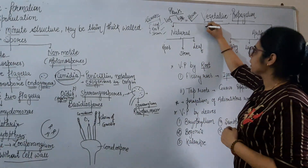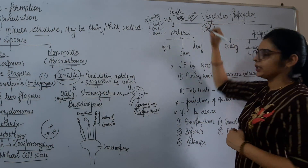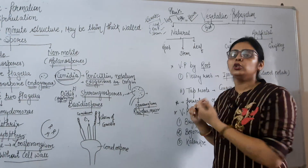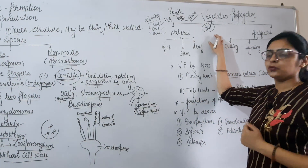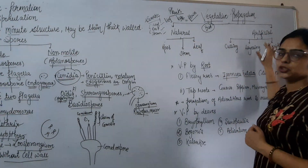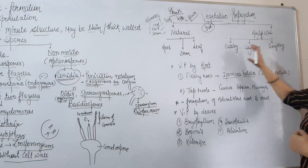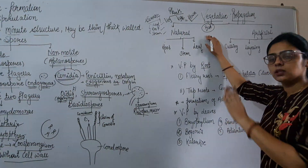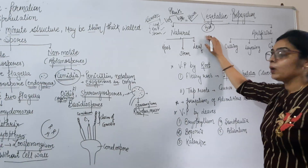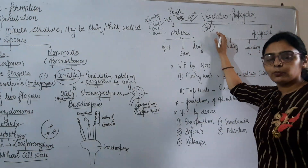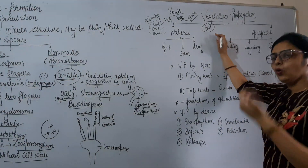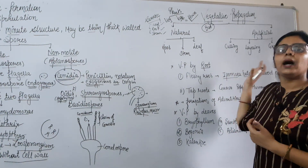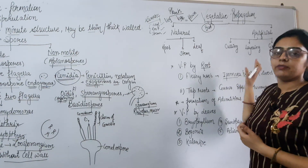The important part in vegetative propagation is bud formation. Buds form on root, stem, or leaf, and these buds form a new plant. Vegetative propagation is of two types: natural and artificial. In natural propagation, buds form without interference from human beings and the plant produces its next generation on its own. In artificial vegetative propagation, humans intervene through cutting, layering, or grafting to form new plants.